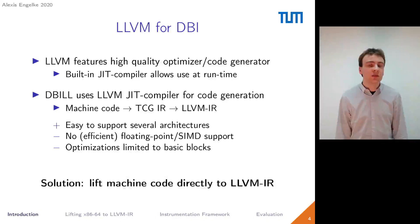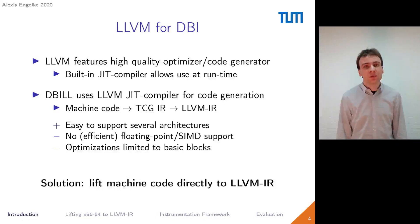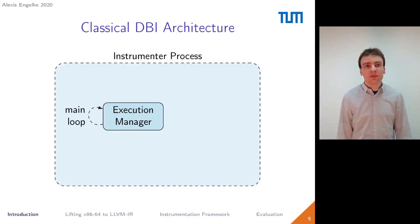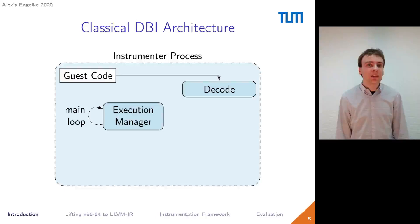Our solution is to lift machine code directly from raw x86 code to LLVM IR code. To see how we can integrate LLVM IR into the architecture of a dynamic binary instrumentation framework, we first look at the architecture of a classical instrumentation framework. In the instrumentation process, we have an execution manager which, at program beginning, loads the guest program into its address space, then starts decoding the program at the entry address.